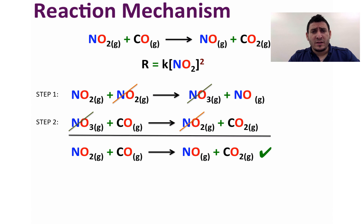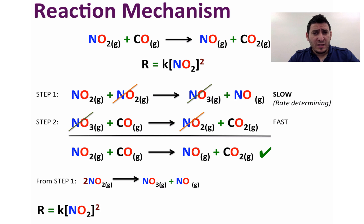Note that the slowest step in the mechanism is called the rate determining step. And therefore here, step one is the rate determining step. From step one, we can deduce that the rate is equal to K multiplied by the concentration of NO2 to the power 2. Now here, 2 is taken from the molecularity, which means it's taken from the coefficient of NO2. This indicates that the mechanism agrees with the experimentally determined rate law.